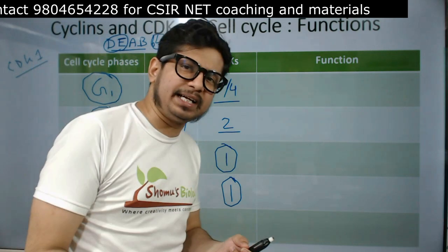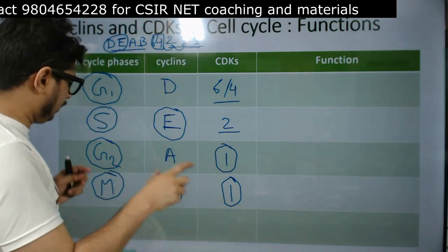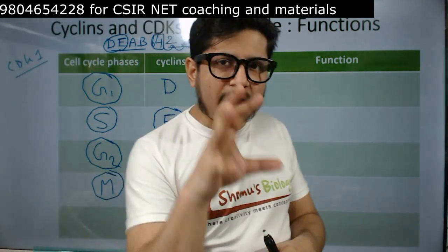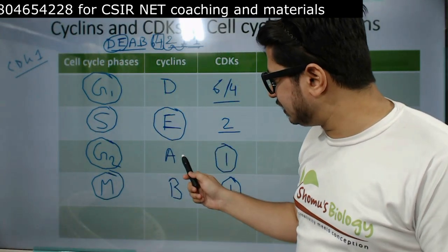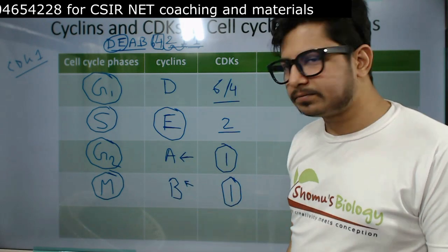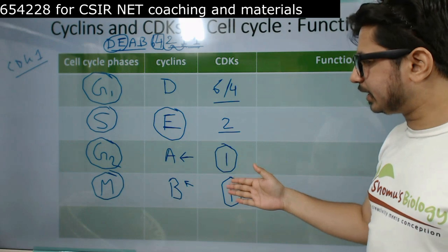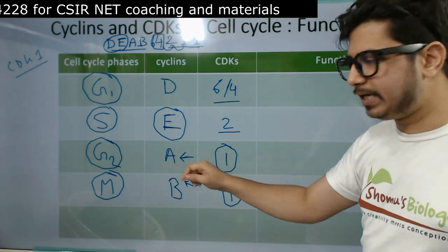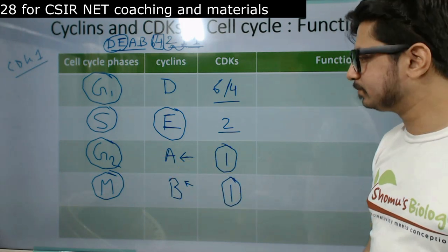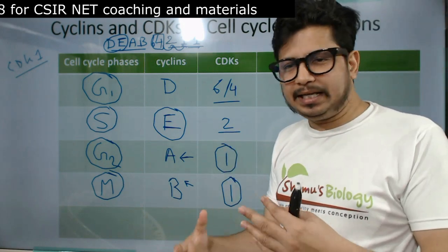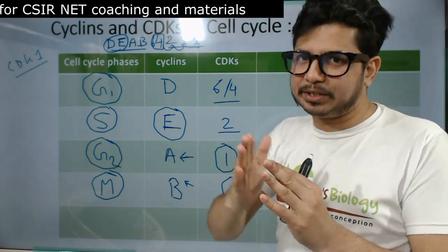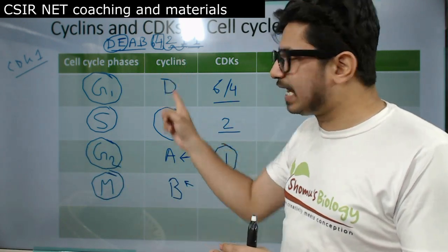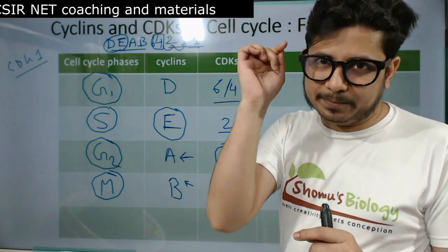So the same CDK — CDK1 — is required for both the G2 phase and the M phase. How is their role specified? It's due to the change in their cyclin partners. In the G2 phase the cyclin partner is Cyclin A, and in the M phase the cyclin partner is Cyclin B. So even though we have the same CDK, changing the cyclin partner results in a different function. The specificity in functions is provided by the cyclins, not by the CDKs. Keep this in your mind.